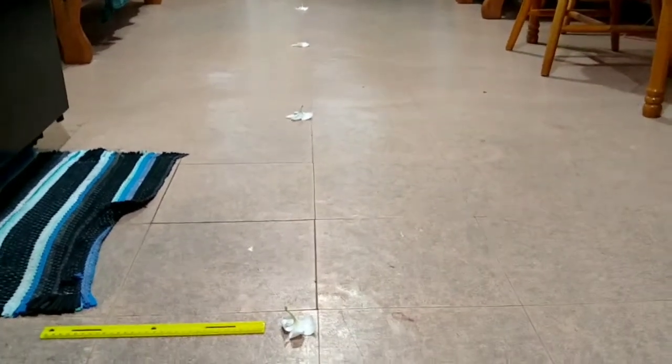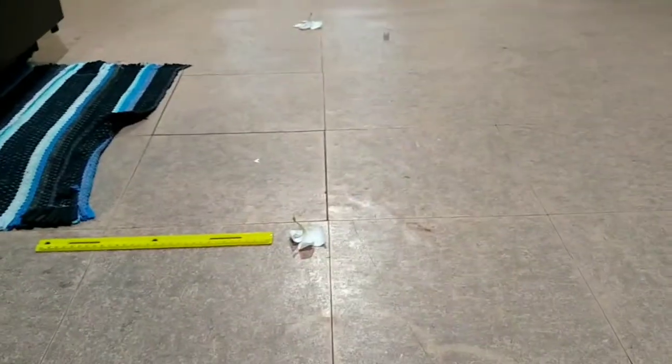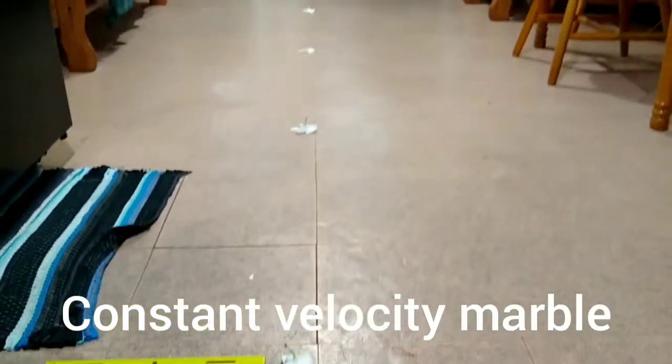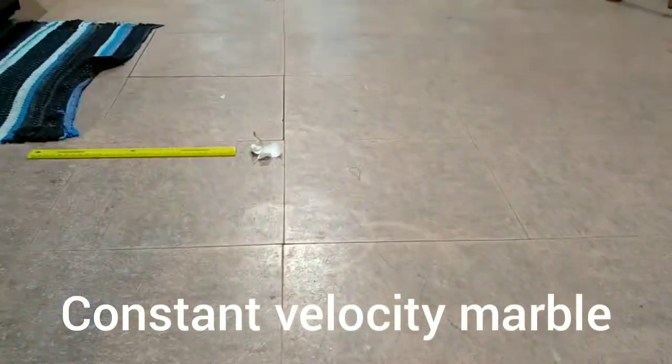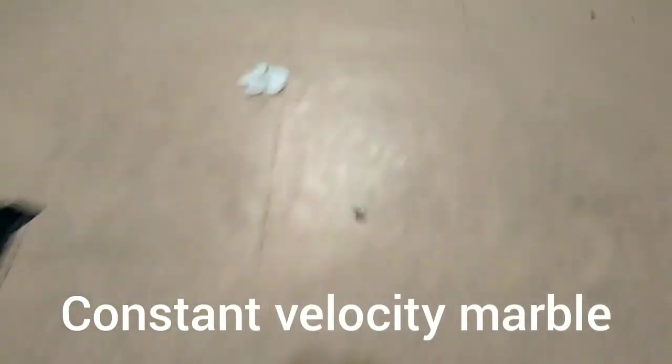Last week, we looked at a marble moving at a constant velocity along the floor. We found that if we measured the time versus the distance, we would get roughly a straight line on a graph.